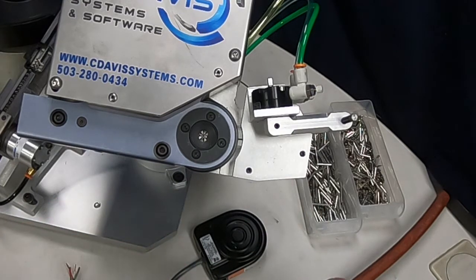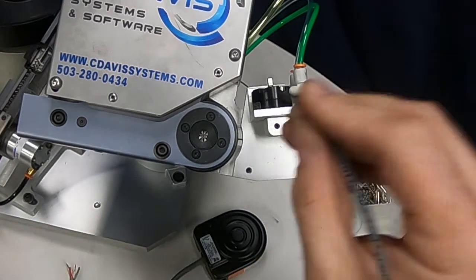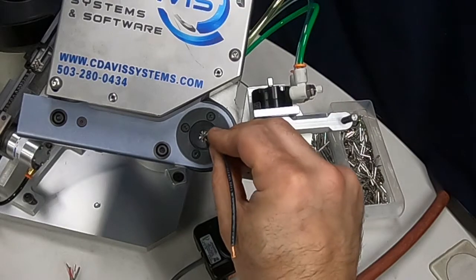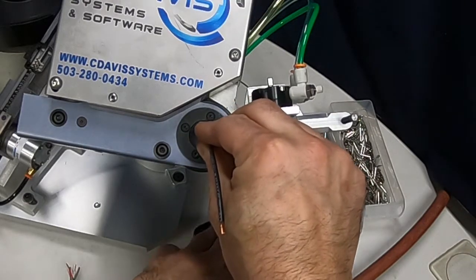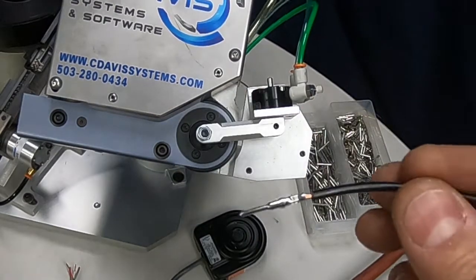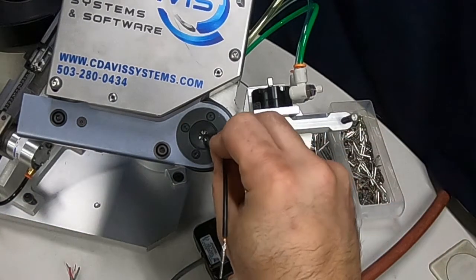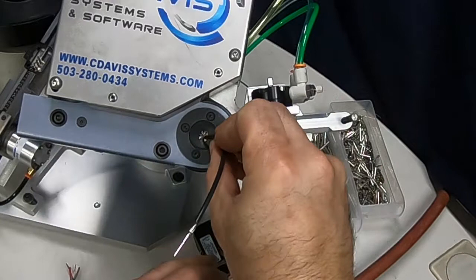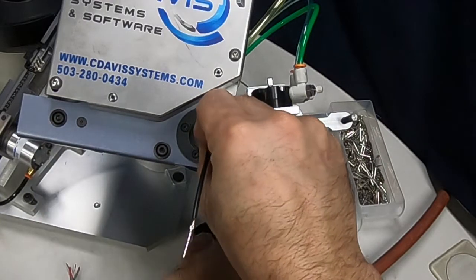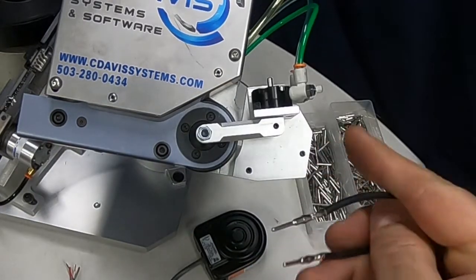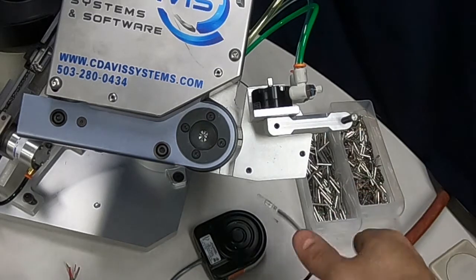I'm just going to take this wire, I'm going to put it into the contact, I'm going to hit the foot pedal, and there's a terminated wire. Once the LC is set up, it is that simple. You just put it in there, and those two terminated wires.